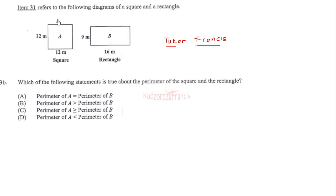Question 31: which of the following statements is true about the perimeter of the square and the rectangle? This is the square and this is the rectangle. We need to calculate the perimeters to see what we can say about them. The perimeter is the distance around the square, so we add all the side lengths. The side lengths are 12 meters each, so we add 1, 2, 3, 4. This is the same as 4 times 12, which gives you 48 meters. So the perimeter of the square is 48 meters.